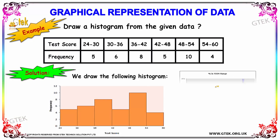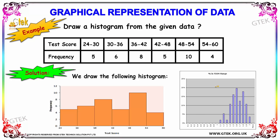Let's go with an example of how to depict histogram problems. We have a tabulation which contains the test score and the frequency. The test score ranges from 24 to 30, 30 to 36, and goes on till 60, with their corresponding frequencies. We have indicated the test score on the x-axis and frequency on the y-axis.